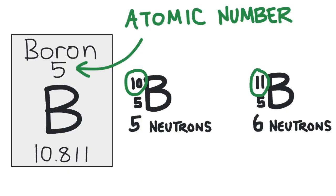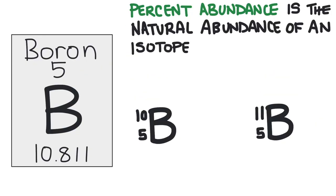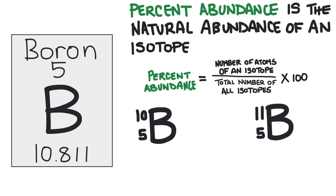These elements have different abundance in nature, and we describe the natural abundance of an isotope by its percent abundance. Percent abundance is equal to the number of atoms of a given isotope divided by the total number of atoms of all isotopes of that element, and then times 100 to turn it into a percent.